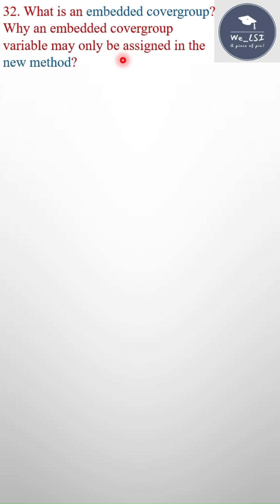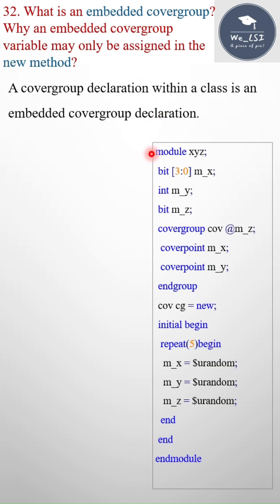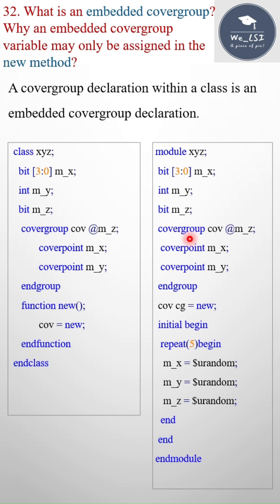What is an embedded cover group and why an embedded cover group variable may only be assigned in the new method? A cover group declaration within a class is an embedded cover group declaration — that means if you write the cover group inside the class, it is called an embedded cover group. If you see here, I have two examples: here I have written the cover group inside the module, and here I have written the cover group inside the class.